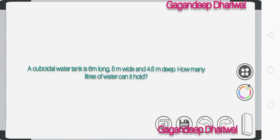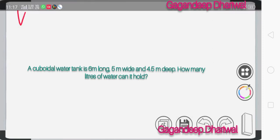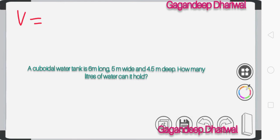So the volume of the water tank is 6 into 5 into 4.5, because the water tank is in the shape of a cuboidal form. And what is the volume of the cuboid? Length into breadth into height. You write all the formulas before solving this. So when we solve this, then we will get 135 meter cube.